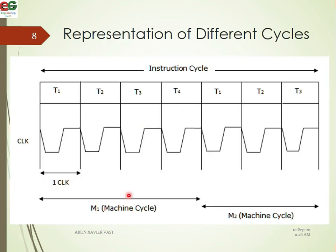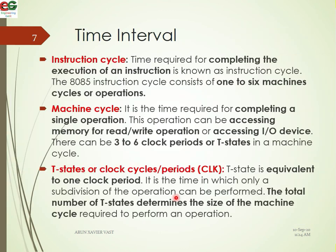Here is the pictorial representation. Here is the clock. This is the rising edge, and this is the falling edge. The low-to-high transition is the rising edge. One complete cycle is one T-state. Now: 1, 2, 3, 4 — four T-states combined make one machine cycle. There will be three to six T-states per machine cycle.